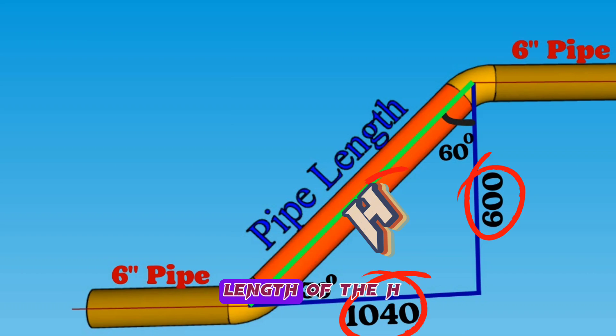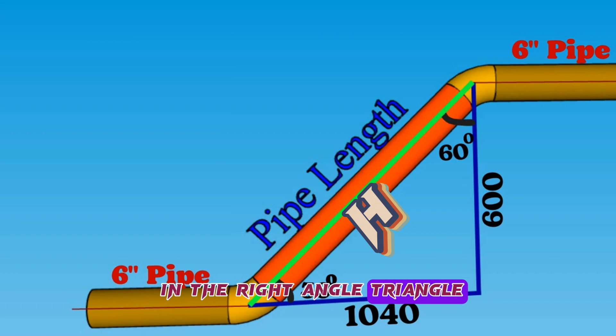We will use the Pythagorean theorem formula to find our hypotenuse in the right-angle triangle. What is the Pythagorean theorem formula?